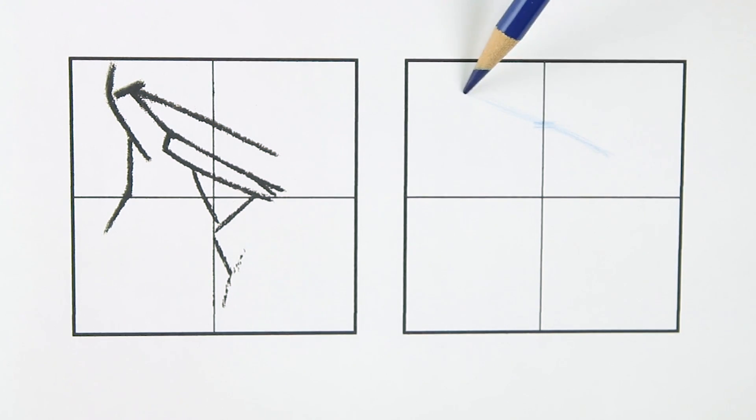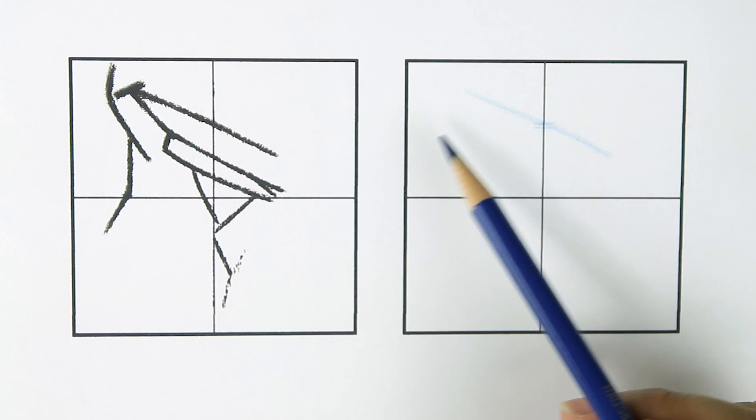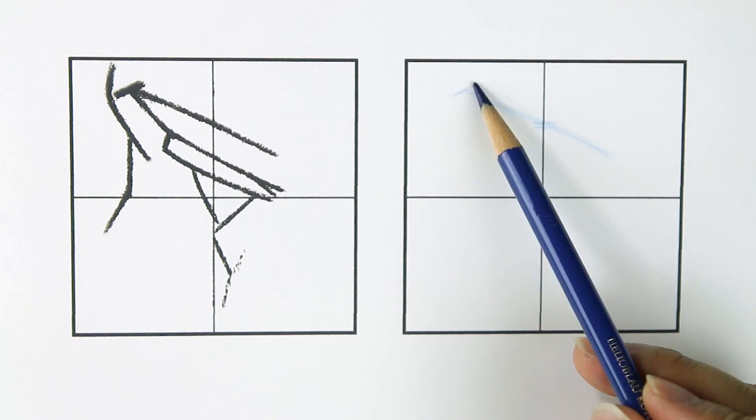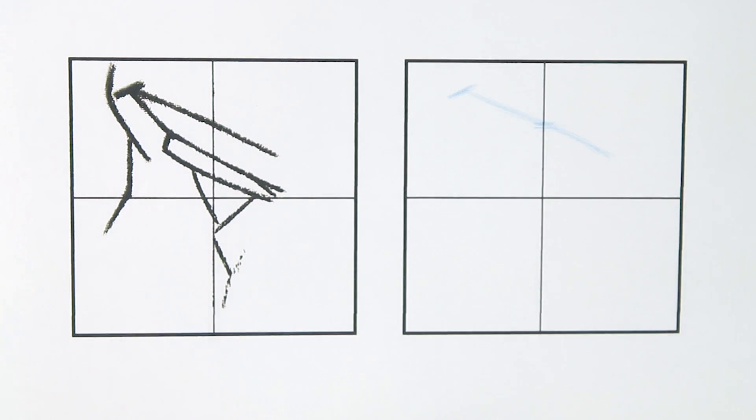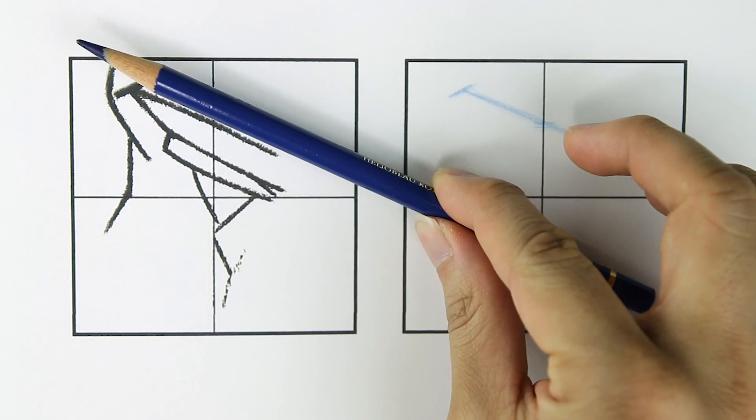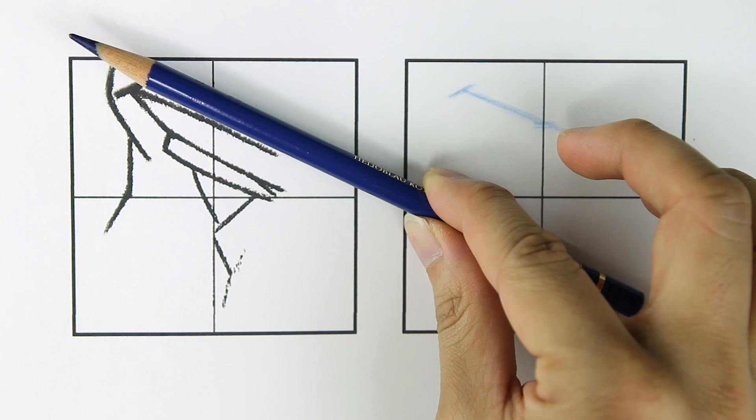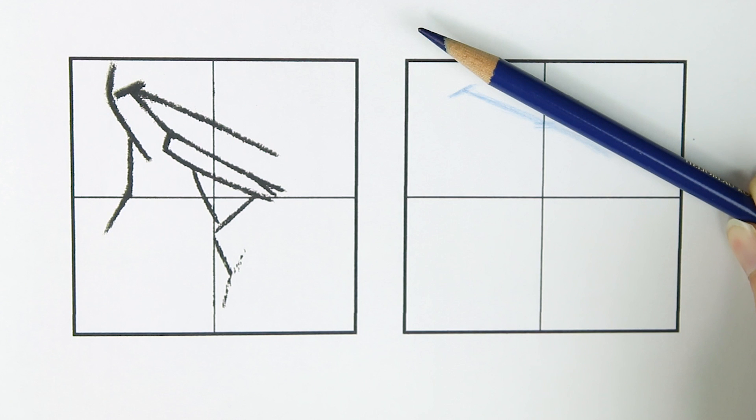The eyebrow is mostly a straight line, but it also has some subtle curve to it so pay attention to that. You might find it helpful to just draw it as a simple straight line first and then add the subtle curves later. Ok, that looks pretty good. Now let's check the angle of the line. I'll align the edge of the pencil with the line to capture the angle and then move the pencil over to the drawing and compare.